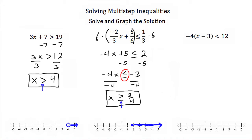Our next example is negative 4 times the quantity x minus 3 is less than 12. You can distribute the negative 4 if you want to, but I think it's easier to just divide both sides by negative 4. If we do that, the negative 4 outside the parentheses and the negative 4 we're dividing will cancel, and we'll be left with just x minus 3. Now we've divided both sides by a negative number, which means we have to reverse our inequality sign. So less than becomes greater than, and 12 divided by negative 4 is just negative 3.